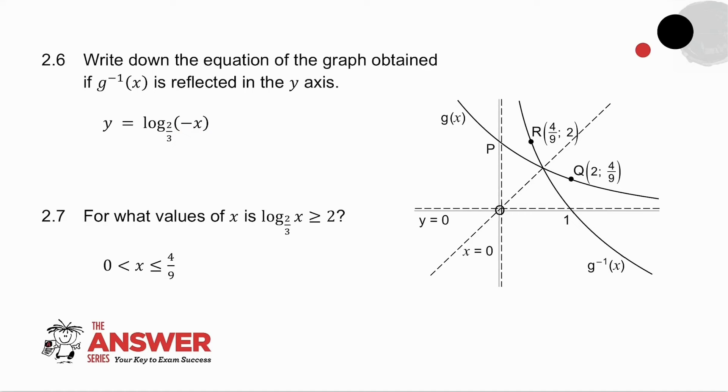Well, if I look at g to the minus 1 of x, that's where g to the minus 1 of x is. All my x values are positive. So when I reflect it in the y-axis, all of my x values are now negative. Which means minus x is minus negative values. In other words, minus x is in fact positive. So it's fine to have log to the base 2 thirds of minus x, because the x values themselves are negative.